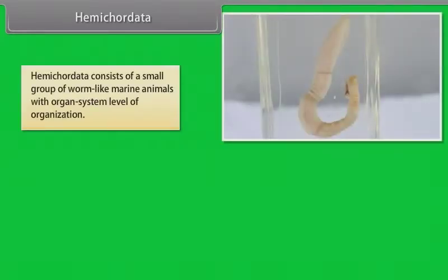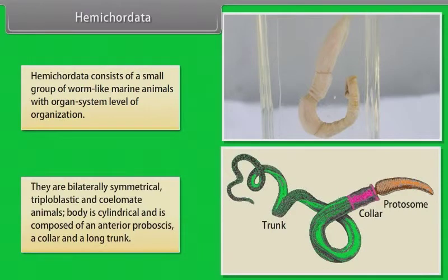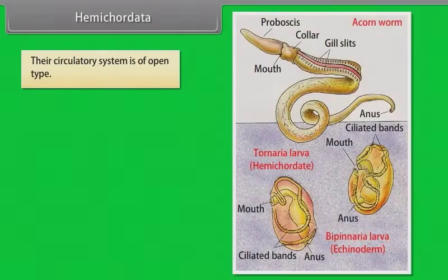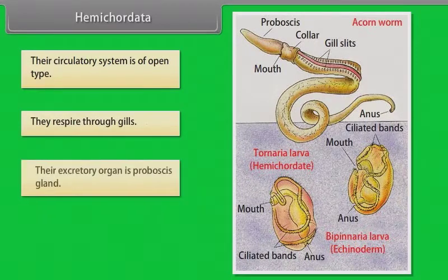Hemichordata consists of a small group of worm-like marine animals with organ system level of organization. They are bilaterally symmetrical, triploblastic and coelomate animals. Body is cylindrical and is composed of an anterior proboscis, a collar and a long trunk. Their circulatory system is of open type. They respire through gills.